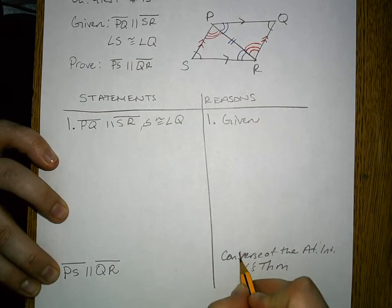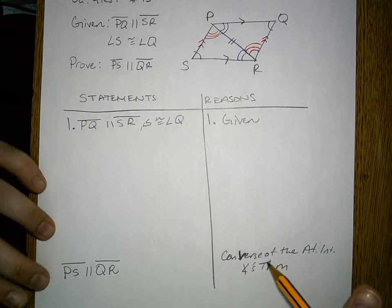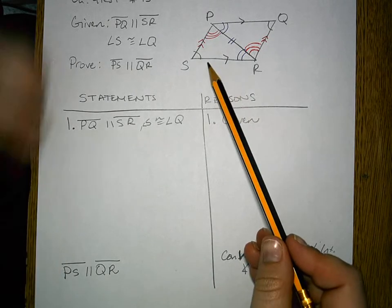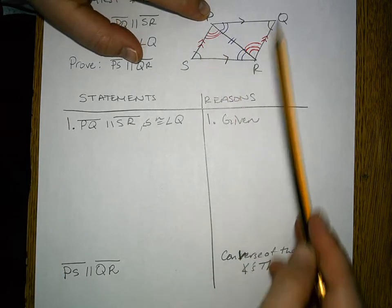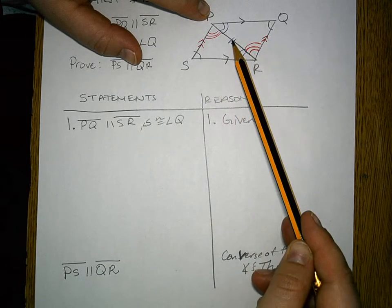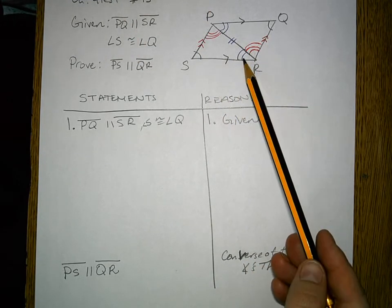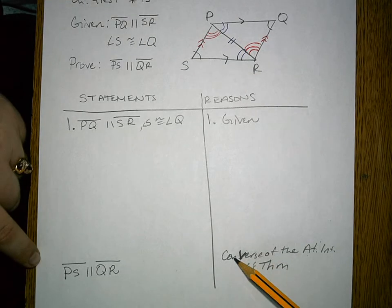You're not always going to be able to write the reason of what you have to prove, but often the proofs that we were given, these simple basic proofs, after you fill in all of your information, you can tell by your drawing what you have to prove.